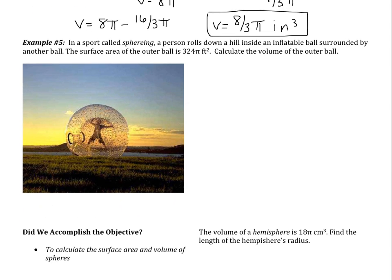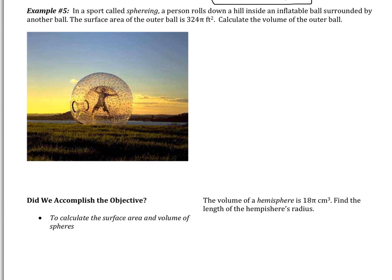So let's look at the next example. This is our last example together. It says, In a sport called sphering, a person rolls down a hill inside an inflatable ball surrounded by another ball. The surface area of the outer ball is 324 pi feet squared. Calculate the volume of the outer ball. So I gave you a picture right there to let you look at what sphering looks like. I was shocked to even hear that this was a sport. But I thought it would be an interesting example. So we are told, surface area is 324 pi. We are asked to calculate the volume.